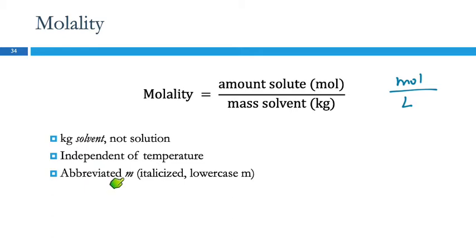Molality is abbreviated with an italicized lowercase m. We've got so many m's, and thankfully we don't use molality very much, especially with handwriting. That lowercase m can easily be confused for meter, so you kind of have to think about the context.